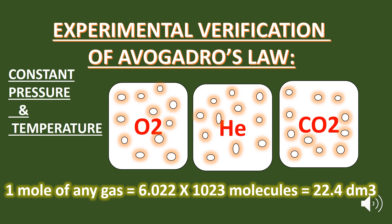One mole of any gas has a volume of 22.4 cubic decimeters at standard temperature and pressure (STP). So, one mole of oxygen gas has a volume of 22.4 cubic decimeters at STP. One mole of helium gas also has a volume of 22.4 cubic decimeters at STP. And one mole of carbon dioxide gas likewise has a volume equal to 22.4 cubic decimeters at STP.